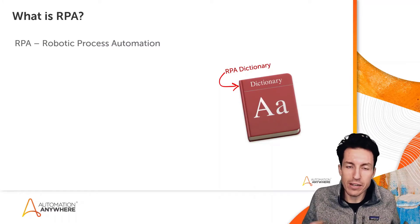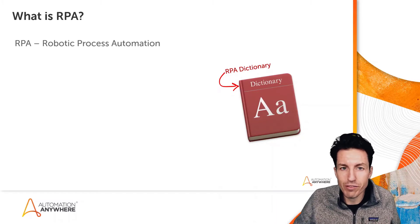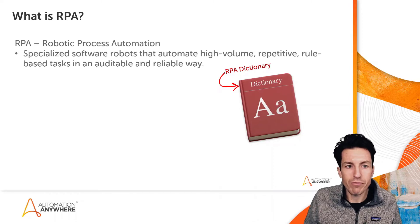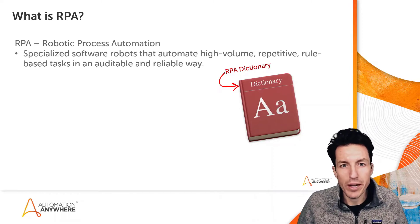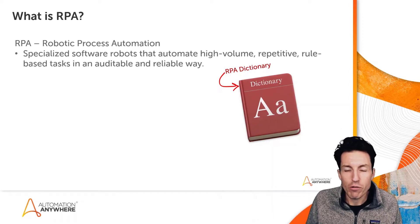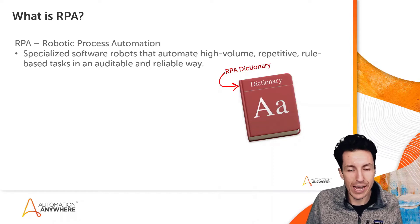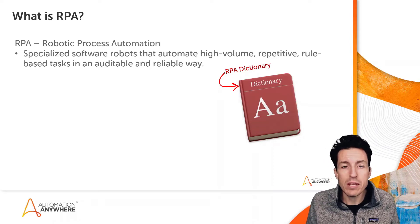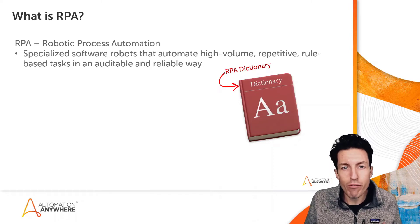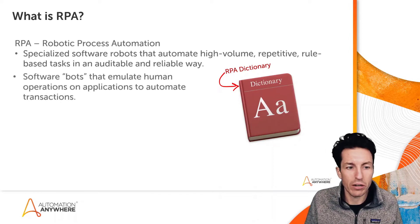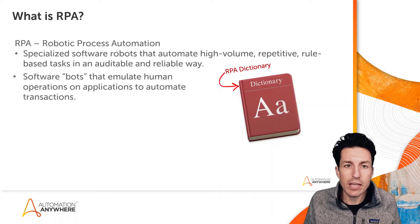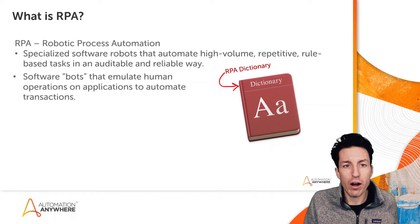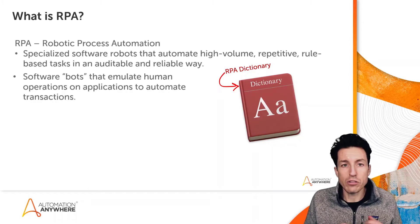That in itself probably doesn't help us to really define what it is, so the definition I would give is: specialized software robots that automate high-volume, repetitive, rule-based tasks in an auditable and reliable way. Essentially, these are software bots that emulate human operations on top of applications to automate transactions.